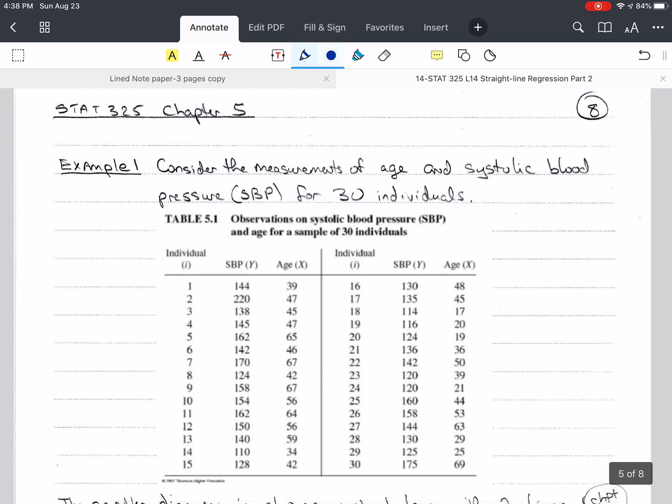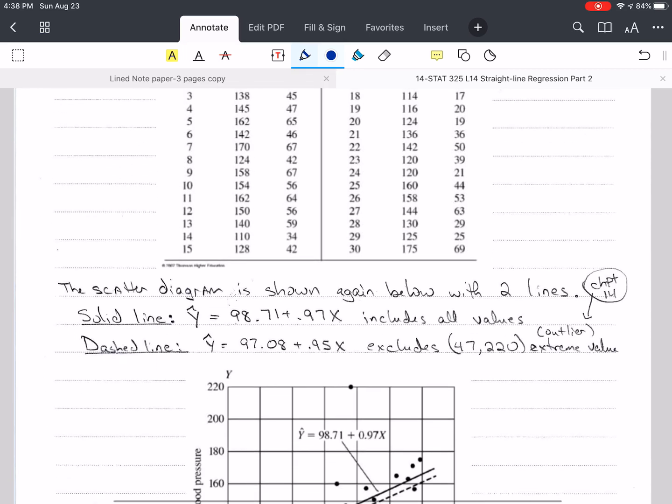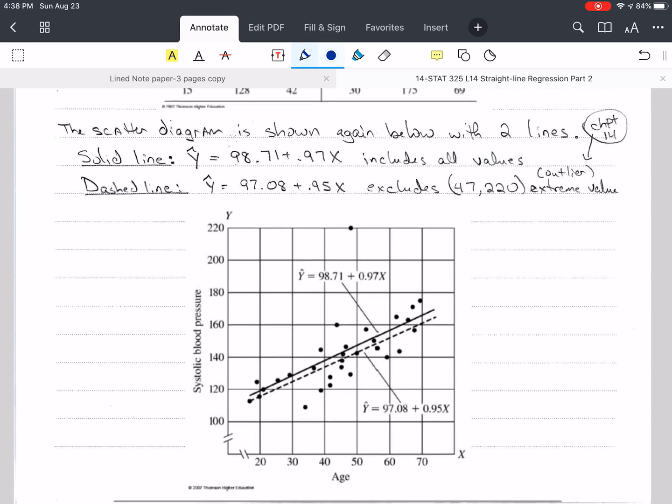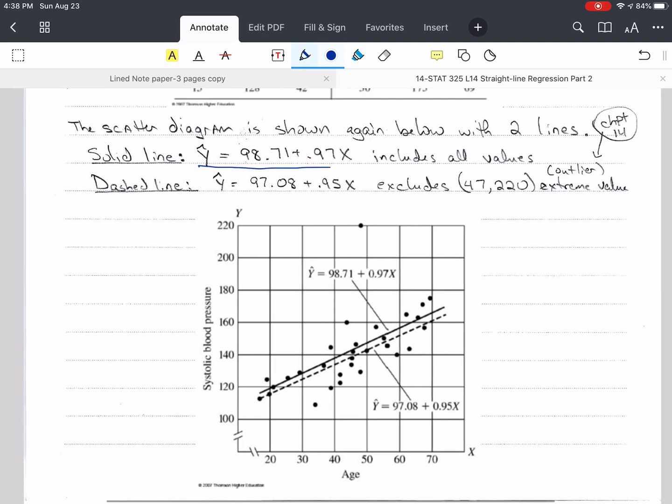So we're going to consider the measurements of age and systolic blood pressure that we talked about earlier for 30 individuals. I've given you the data set here. So here you have the values, and you can look through those at your own convenience. And what we're going to do is we're going to do a scatter plot, but now we're going to plot the best fitting lines. So the solid line is given by this equation here, and it includes all values. But notice this value, 47 to 20. It's an extreme value or an outlier.